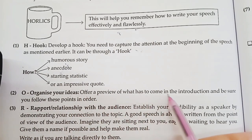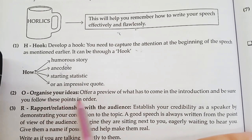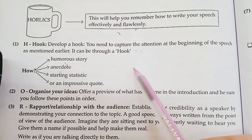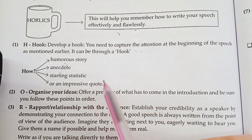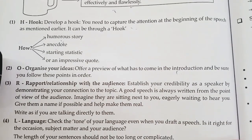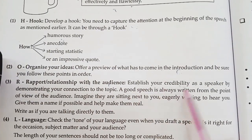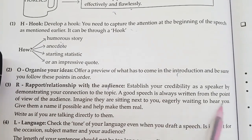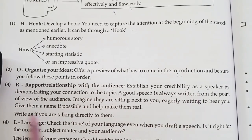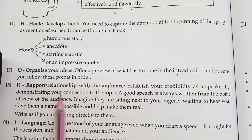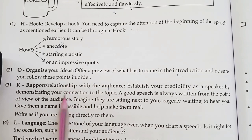Next is O — Organize your ideas. Give a preview of what is to come in the introduction, and follow these points in order. After that is R — Rapport, or relationship with the audience. Establish your credibility as a speaker by demonstrating your connection to the topic. You have to connect yourself as a speaker to your topic in your speech.